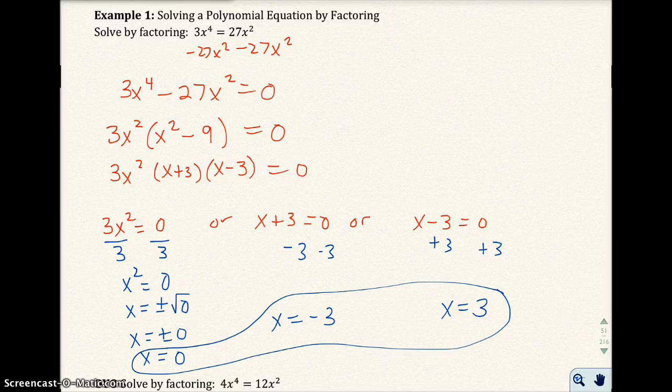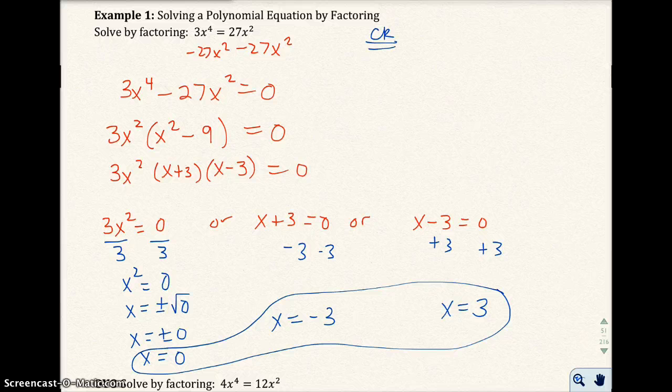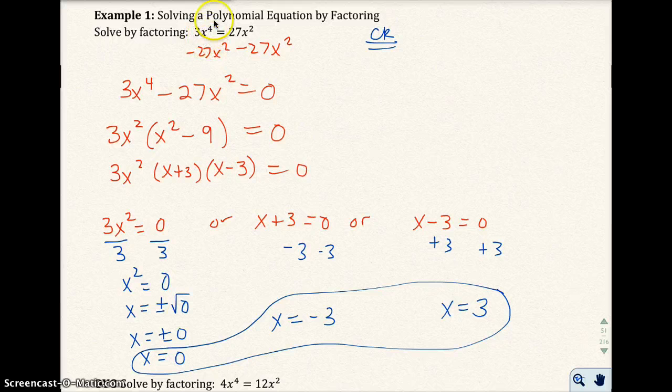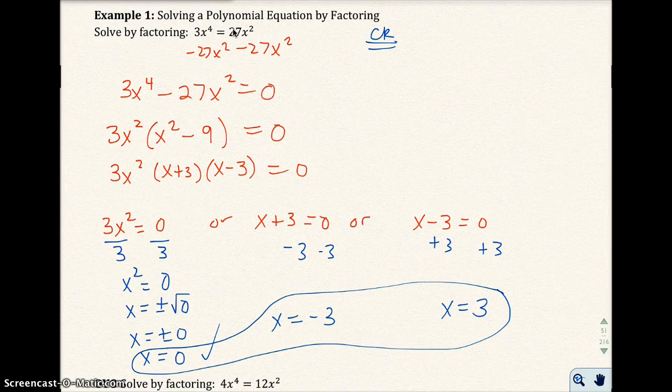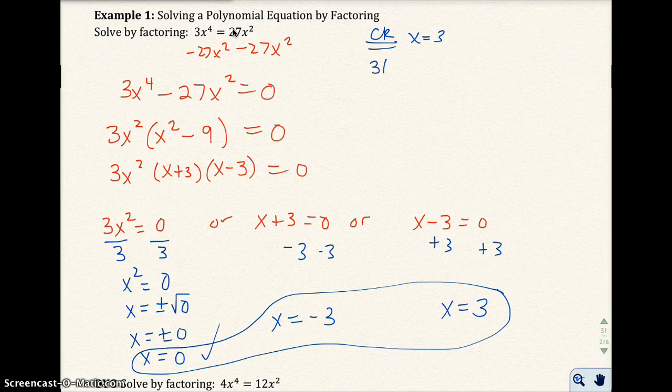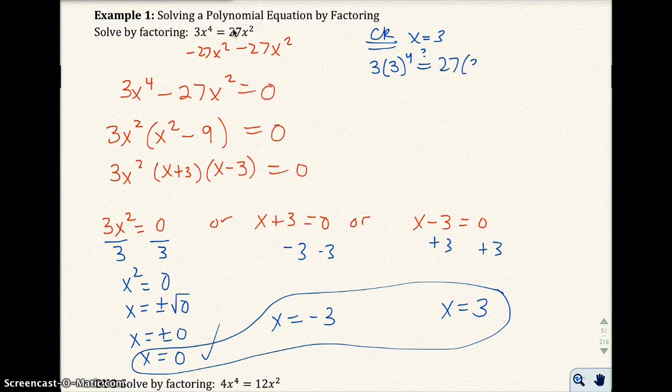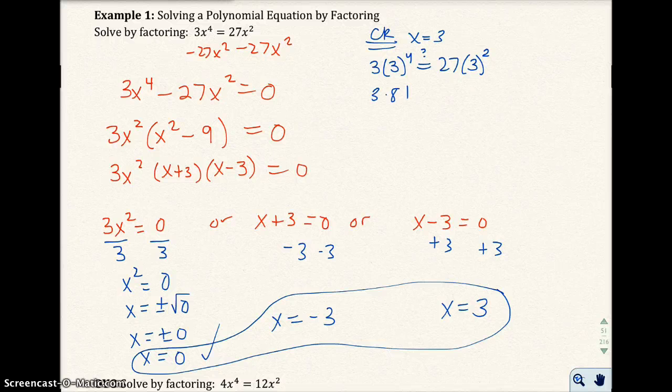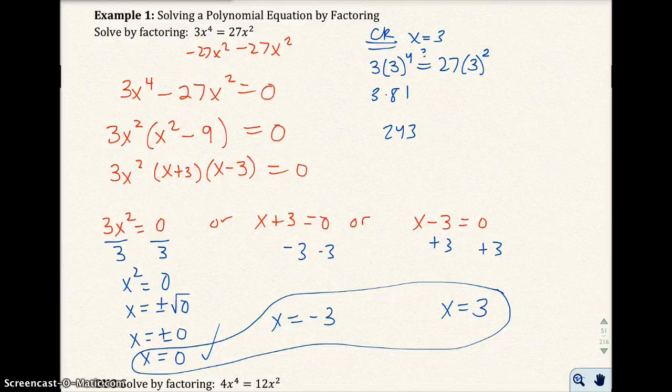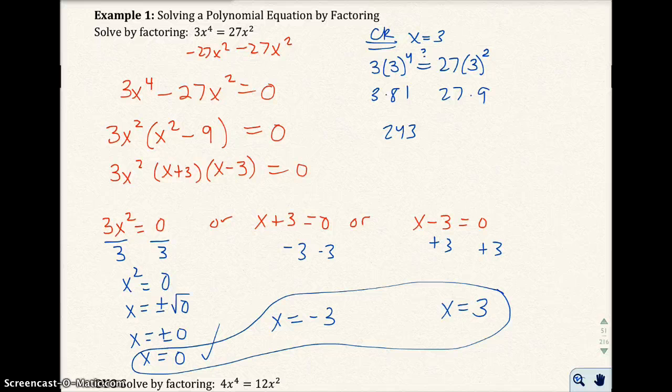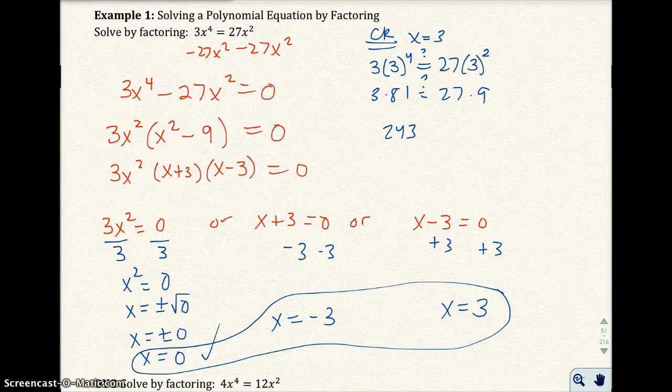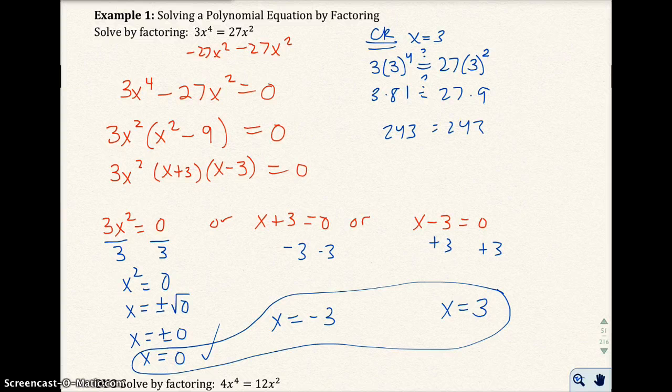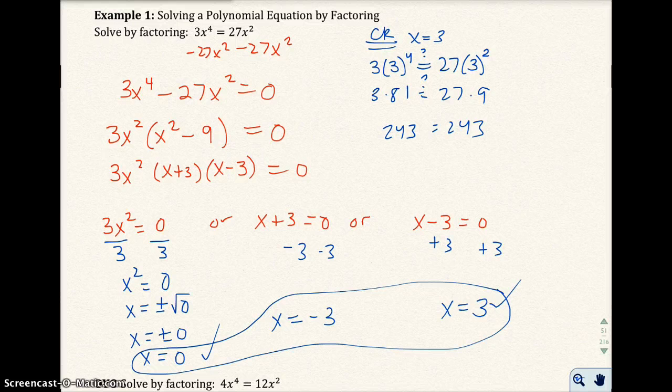Okay, let's check my answer real quick. If I check zero, zero to the fourth power times 3 is zero, and zero squared times 27 is zero. So this one's pretty easy to check. If I check 3, I have 3 times 3 to the fourth power. 3 to the fourth power is 81, so 3 times 81 would be 243. And 3 squared is 9, and 9 times 27 is 243. So that one does check. And if I do negative 3, that will also check.